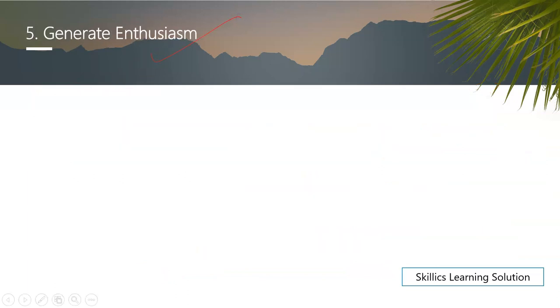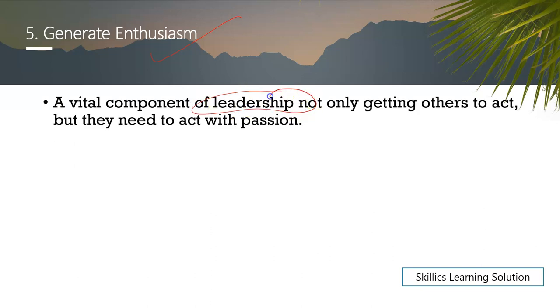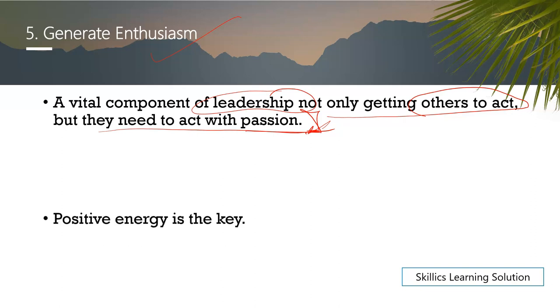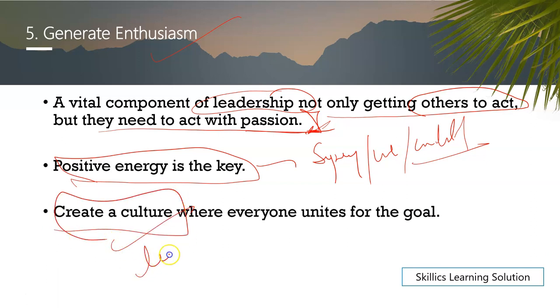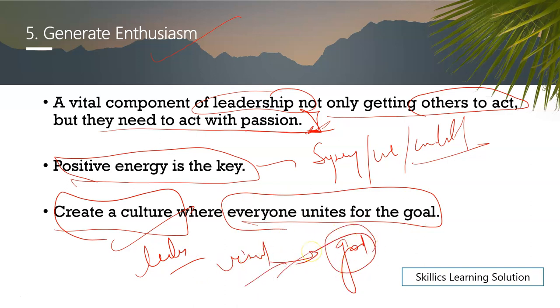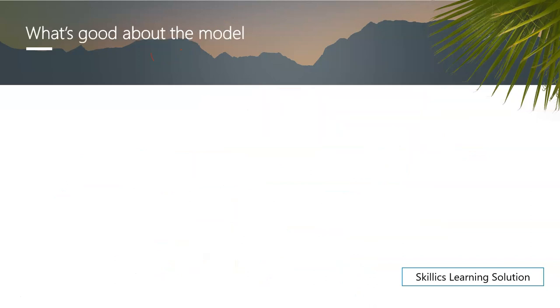And the fifth one is called generating enthusiasm. What does this mean? What is a vital component of leadership? To act with passion. Just doing the work is not a big art. People do that. But what makes people self-motivated and passionate for their work? That's the role of the leader. Because positive energy is the key. You know, if you have synergy and unity and coordination in that situation, the positive environment and energy is very important. And create the culture. You have to create the culture as a leader because everyone unites to the goal and the vision to complete it.